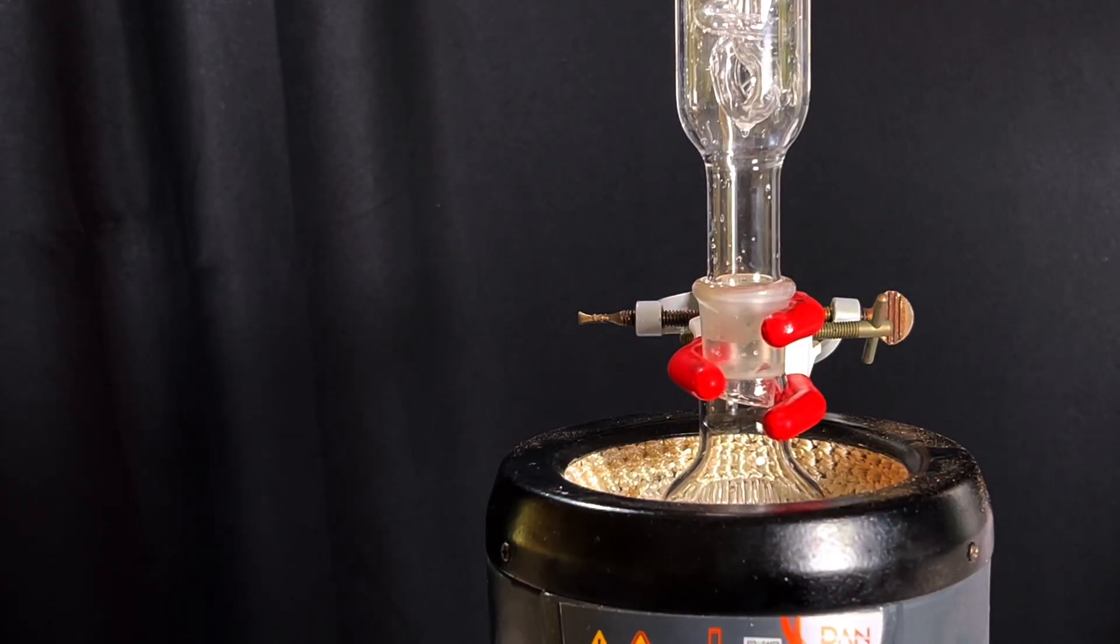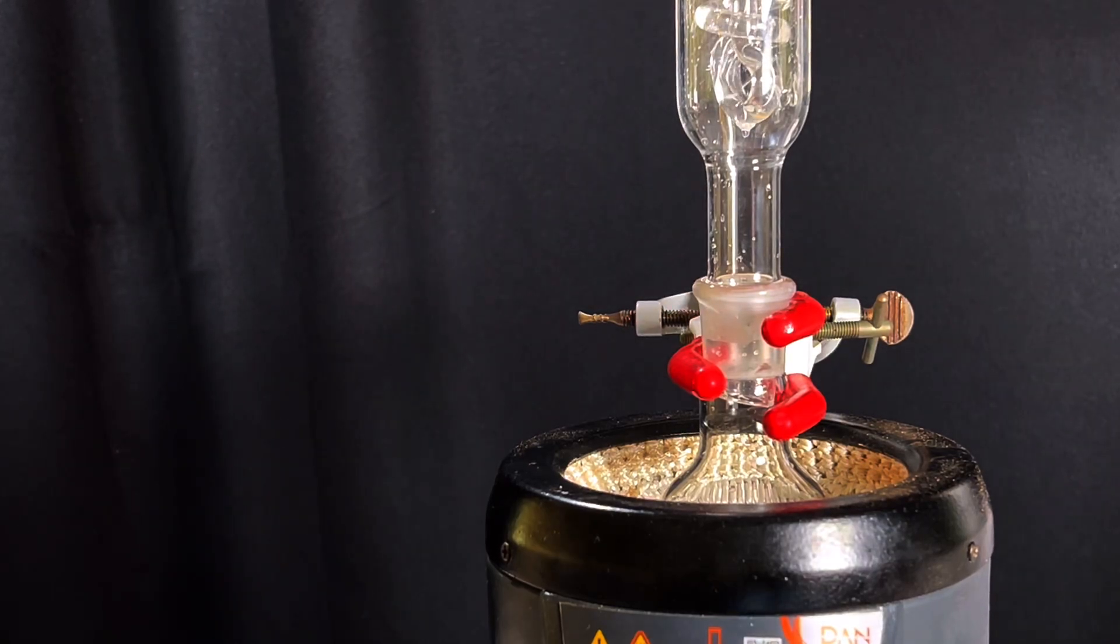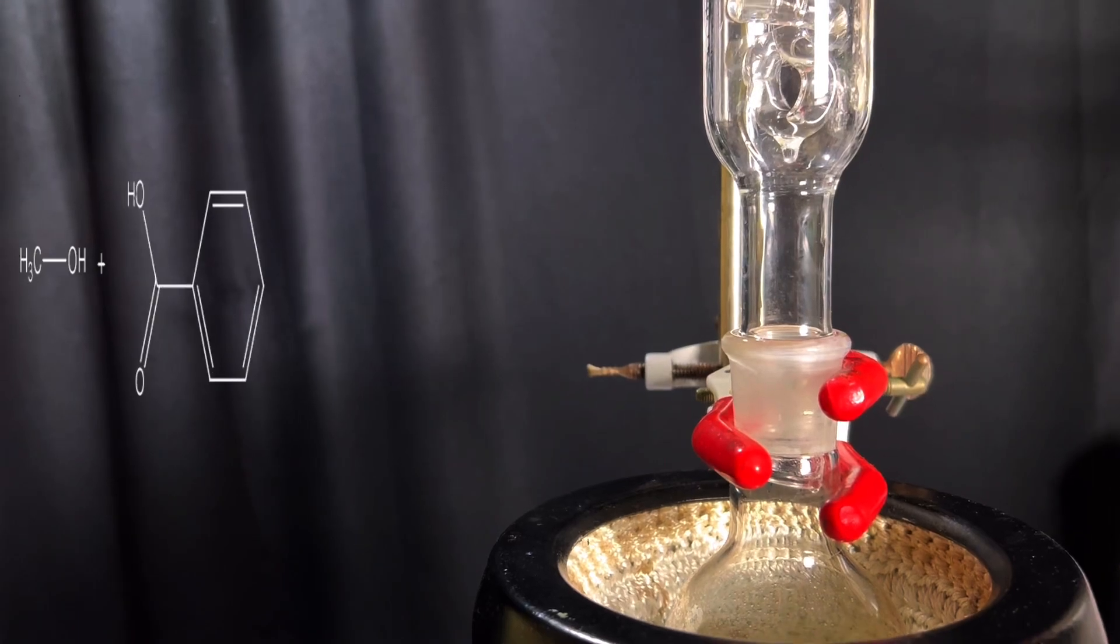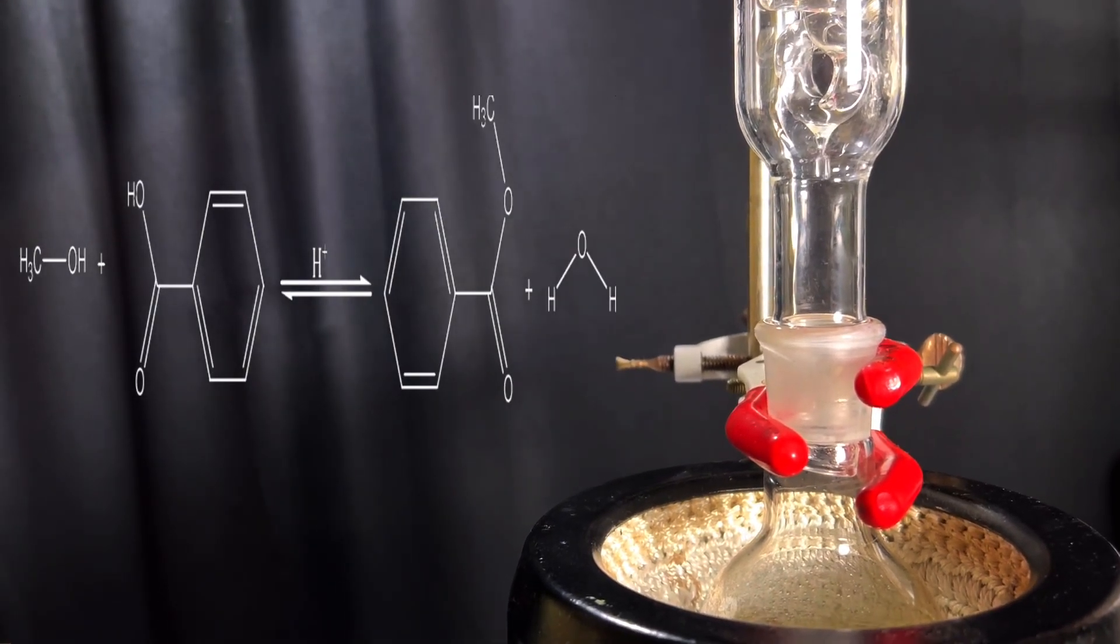Now lower the flask to a heating mantle and then reflux the solution for 4-5 hours. What's happening here is called the Fischer Esterification Reaction where benzoic acid reacts with methanol in the presence of an acid catalyst to form the ester methyl benzoate.